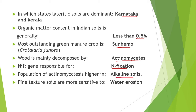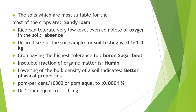Next point is, the population of actinomycetes is higher in alkaline soil. Fine textured soils are more sensitive to water erosion. Next point is, the soil most suitable for most crops is sandy loam soil. Rice can tolerate very low levels, even completely absent oxygen in the soil.